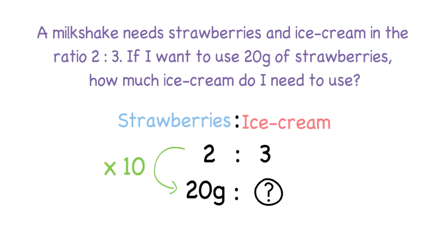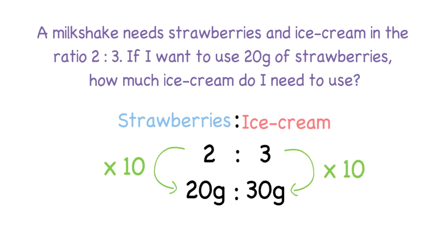Look at the column that has all of the information — in this case, strawberries. Find how you get from the ratio to the amount: to go from two to 20 you times by ten. Then do the exact same thing on the other side: three times ten gives 30. So for 20 grams of strawberries you will need 30 grams of ice cream.